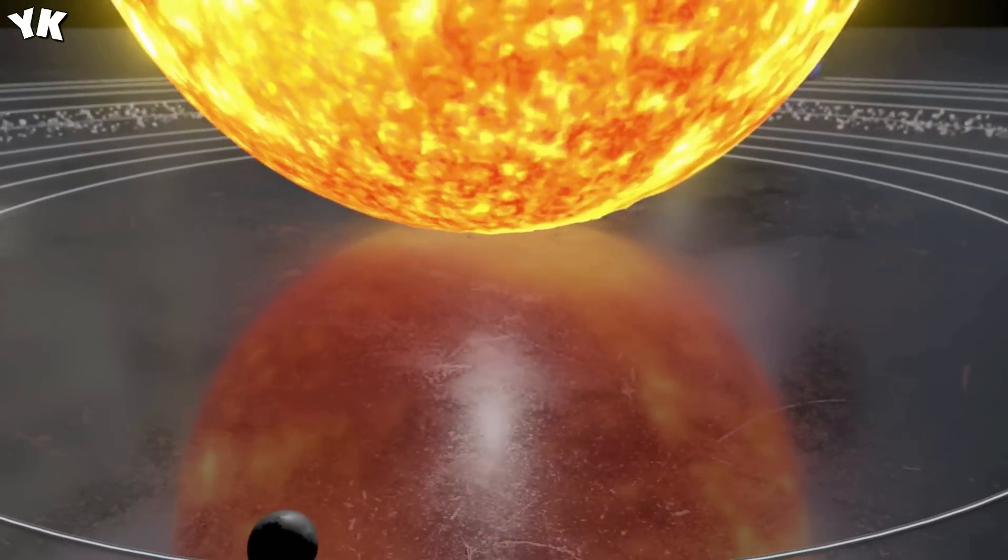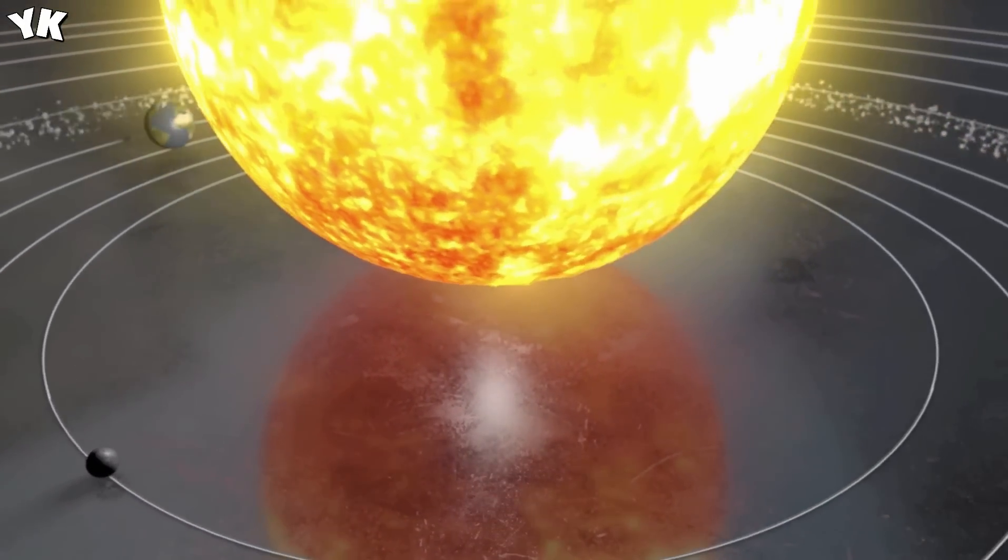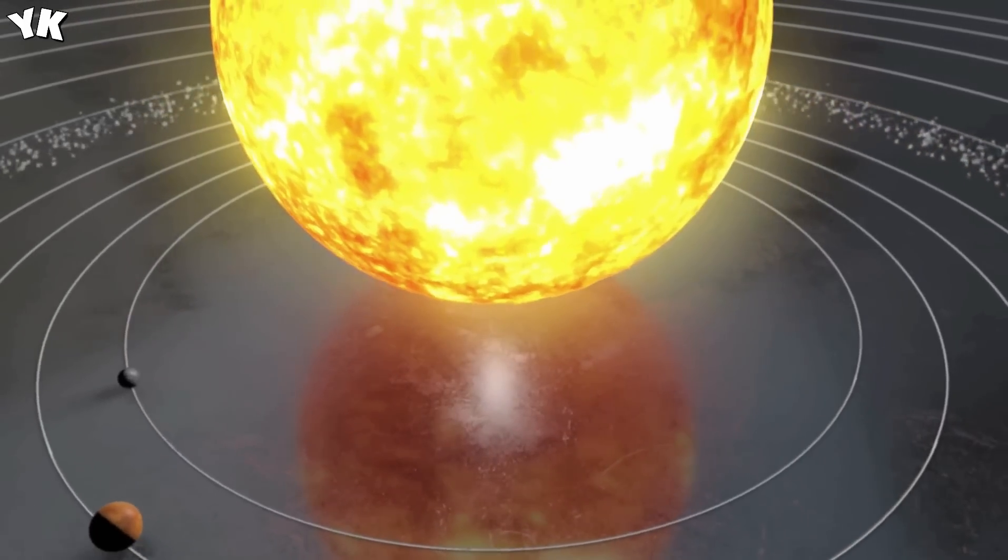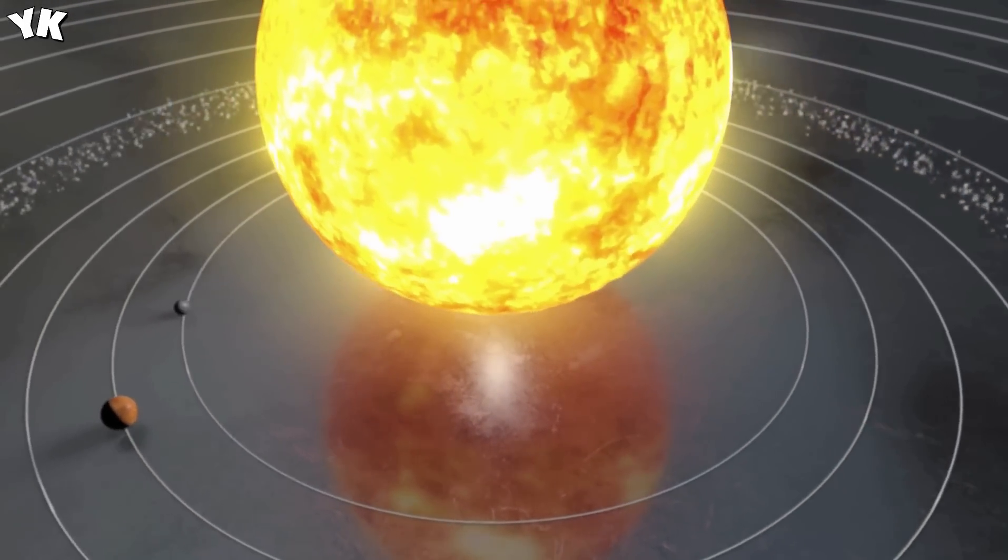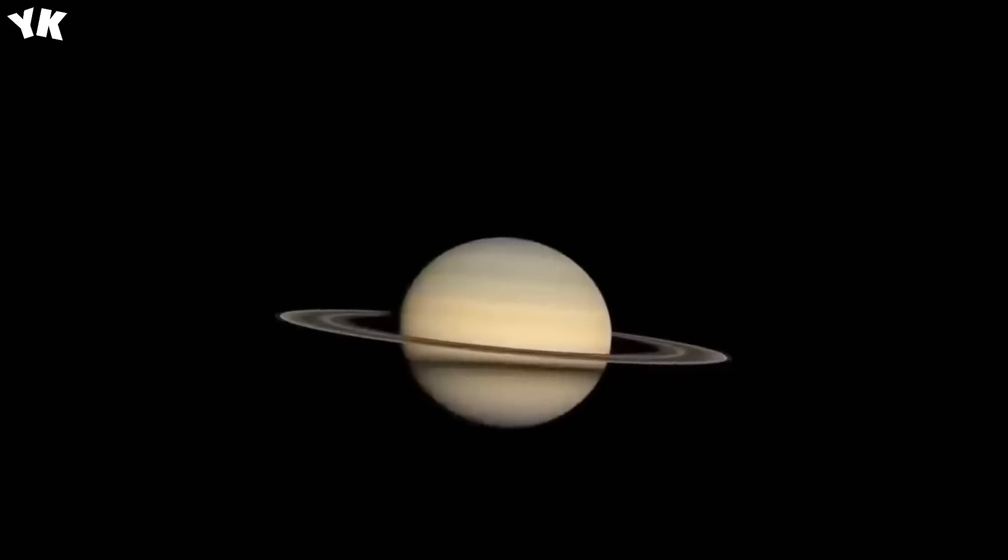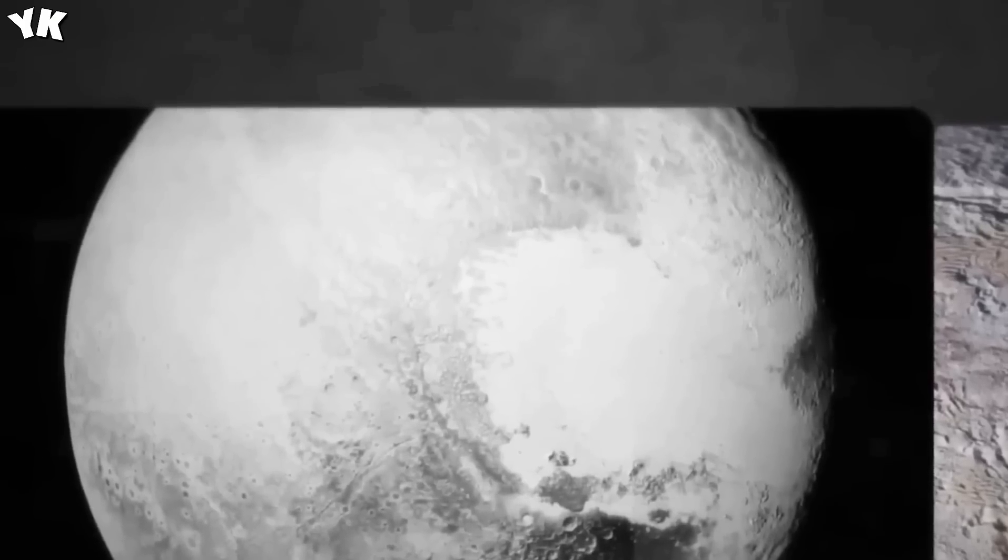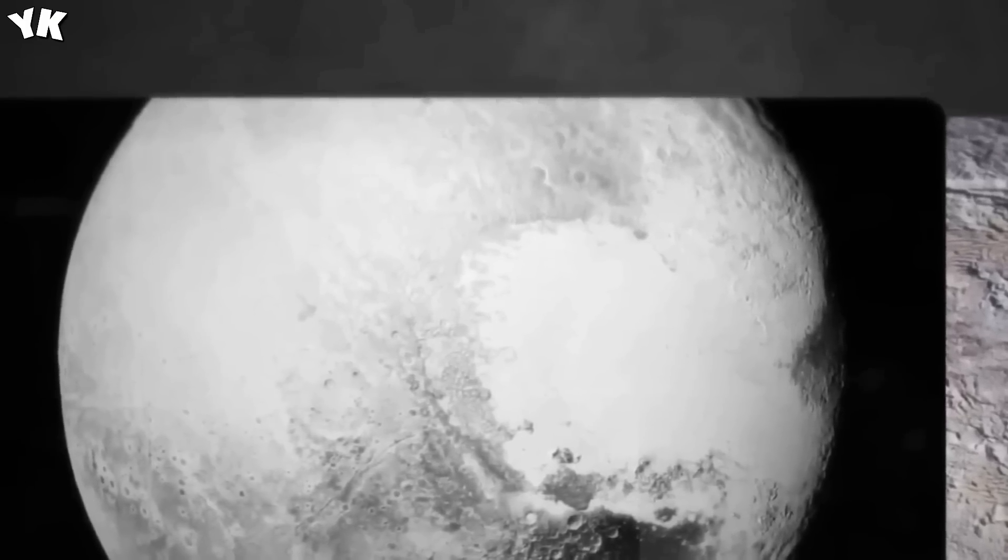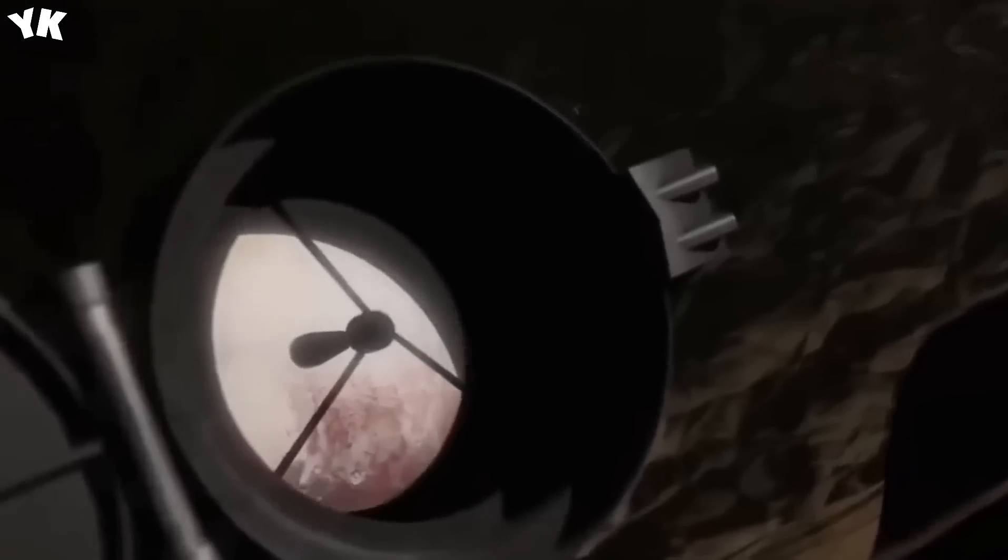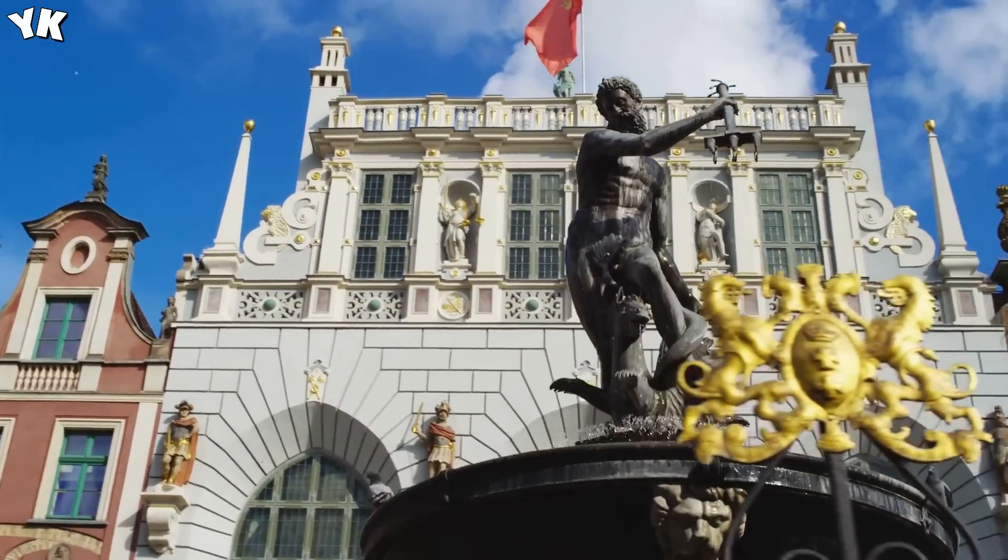A collision between Pluto and Neptune would be an unusual and catastrophic event in our solar system. This collision would release a massive amount of energy, likely breaking apart Pluto due to its smaller size and icy composition. Debris could scatter across the solar system, posing potential hazards. For Neptune, such an impact could potentially alter its atmosphere and orbit.